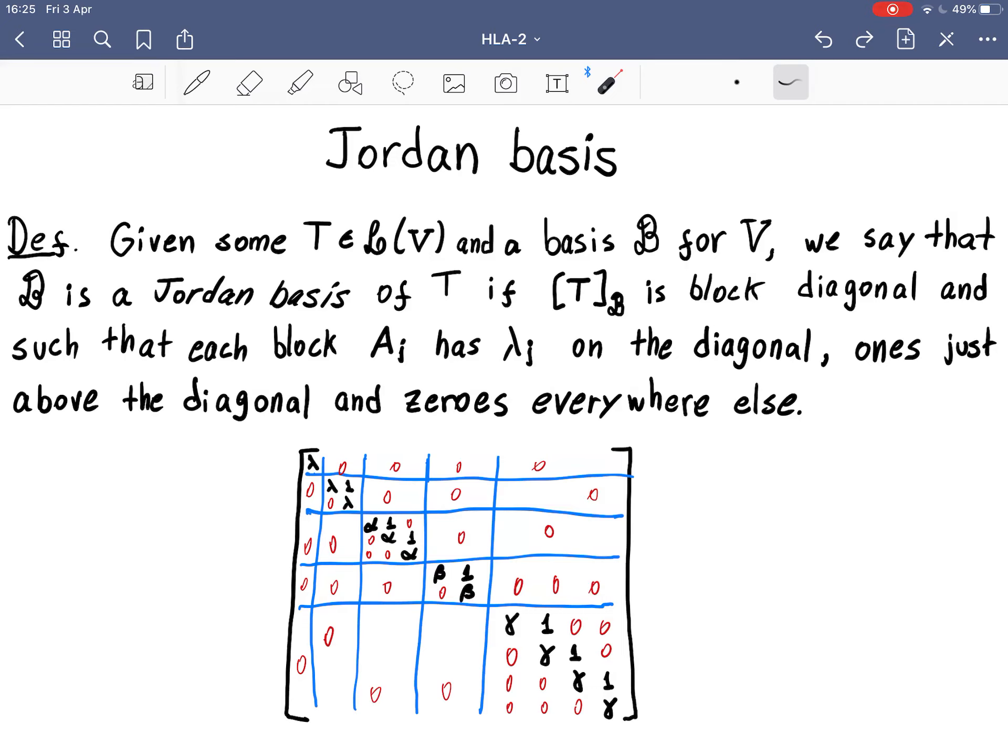So a Jordan block is a block with the same eigenvalue on the diagonal and one just above the diagonal. What happens if one of these ones is absent? Well, if one of them is absent, which is exactly what you have here, then you break the block into two.